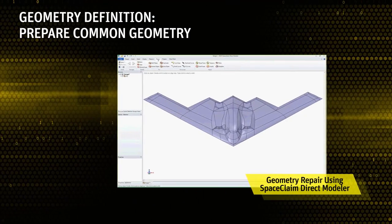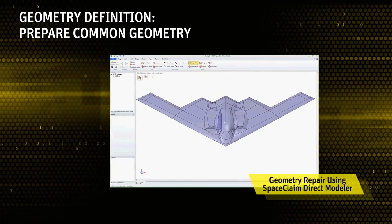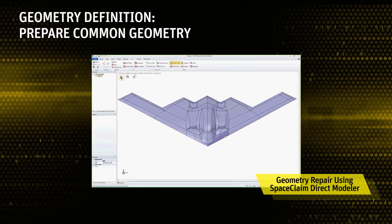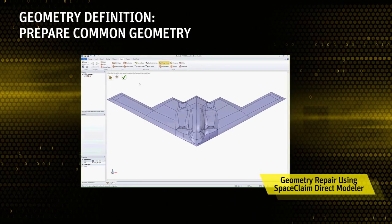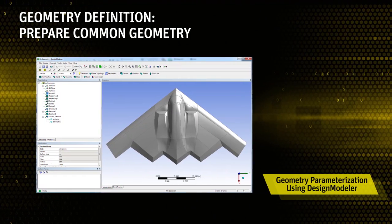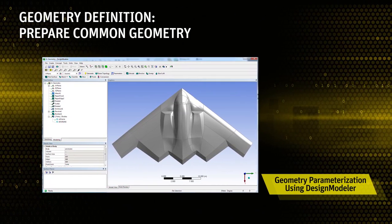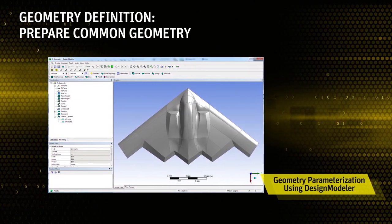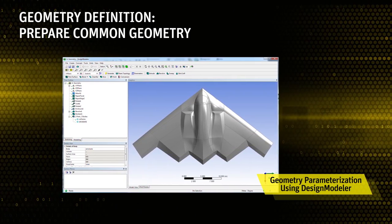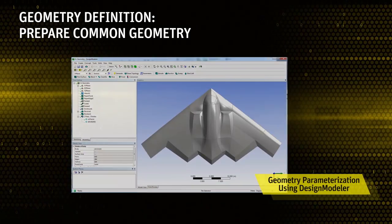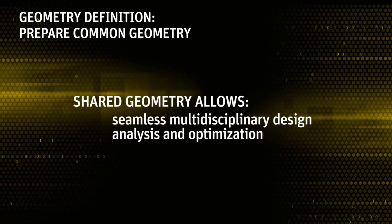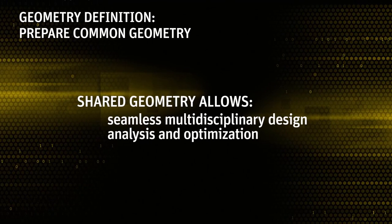ANSYS SpaceClaim and Design Modeler are geometry tools used to prepare CAD geometry for both aerodynamic and RCS simulations. In this study, SpaceClaim was used to simplify and repair the geometry. The resulting clean geometric model facilitates generation of a high-quality mesh and consequently faster solution convergence. Design Modeler was used to parameterize the geometry for design exploration. The shared geometry and design parameters between different physics allows seamless multidisciplinary design analysis and optimization.